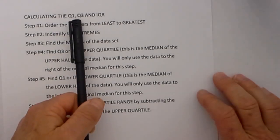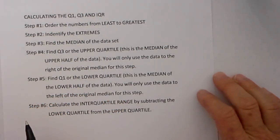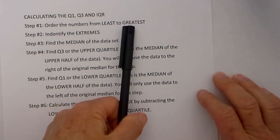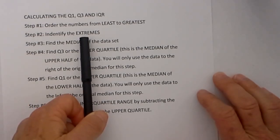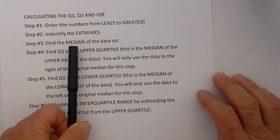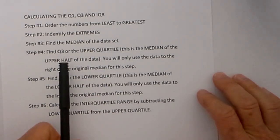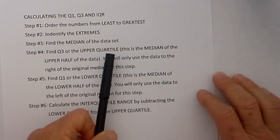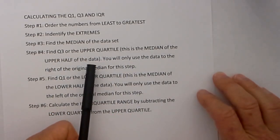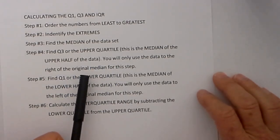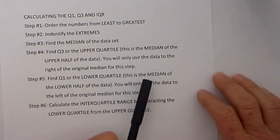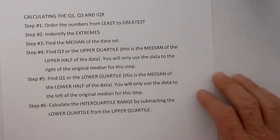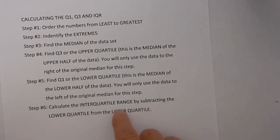Step 1 in finding Q1, Q3, and IQR is to order the numbers from least to greatest. Once they are in order, step 2 is to identify the extremes. Next, you will find the median of the entire data set. Step 4 is find Q3 or the upper quartile — this is the median of the upper half, using only the data to the right of the original median. Step 5 is find Q1 or the lower quartile, which is the median of the lower half. Finally, calculate the IQR by subtracting the lower quartile from the upper quartile.